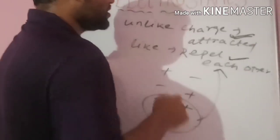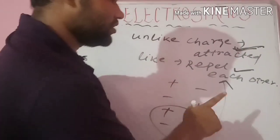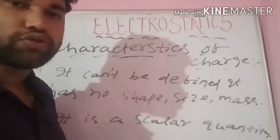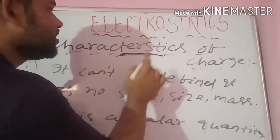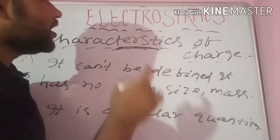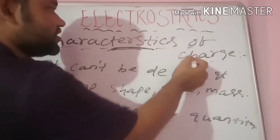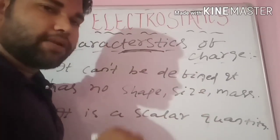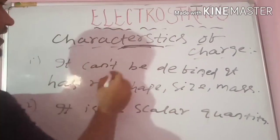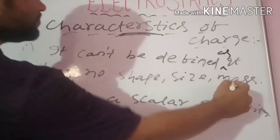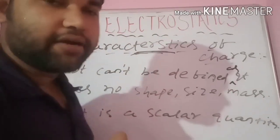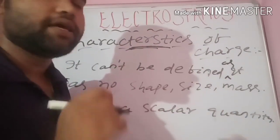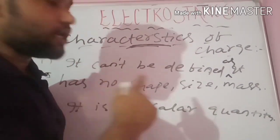When unlike charges — positive and negative — are in contact with each other, they attract each other. When like charges are in contact, they repel each other. We have the charge definition, introduction, and characteristics. A question to consider: write 3 or 4 points of characteristics of charges. Charge cannot be defined by shape, size, or mass.